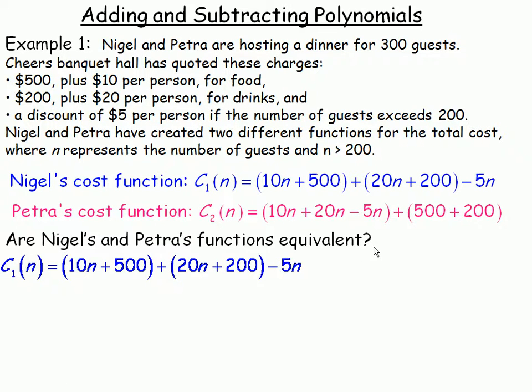We'll start with Nigel's cost function. This is copied down exactly as it was above. Now since we're adding these polynomials, we'll just remove the brackets and not forget the minus $5N at the end. So $10N plus $500 is still $10N plus $500. $20N plus $200 is still $20N plus $200.